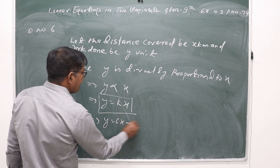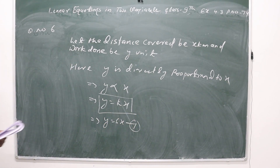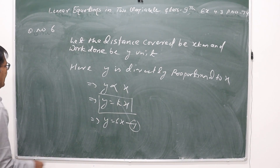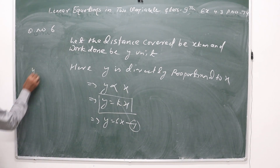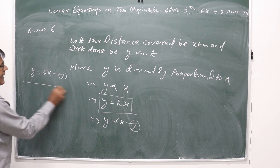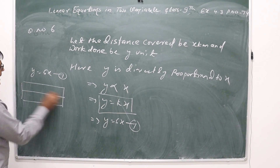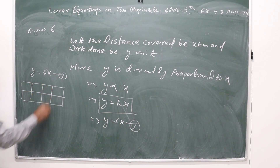So y = 5x is the given equation. Now to draw the graph, we make a table and take any three sets of solutions.